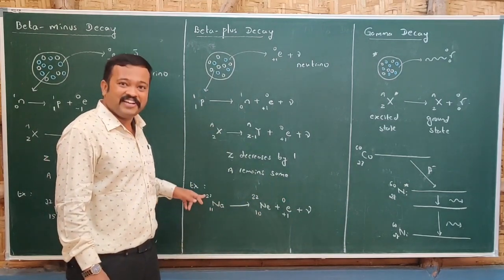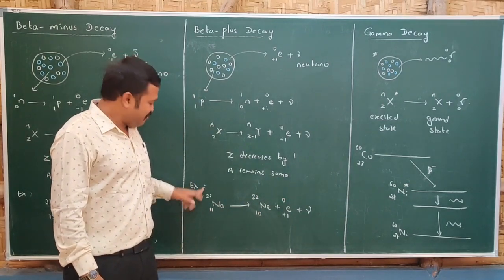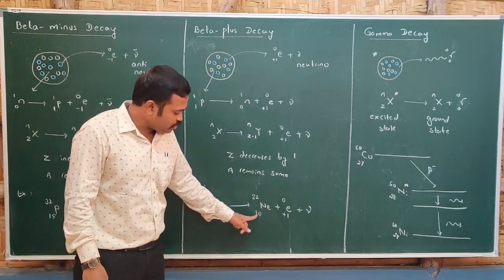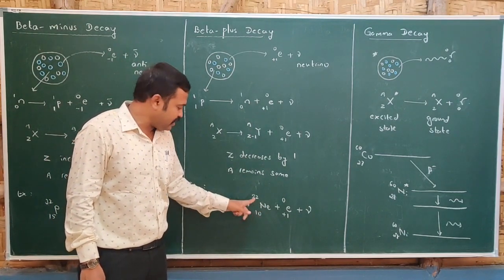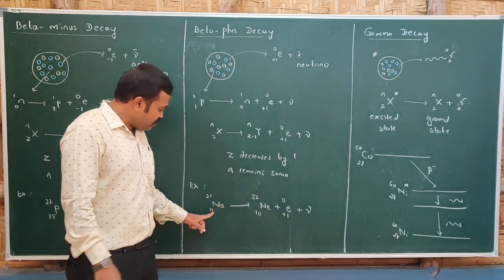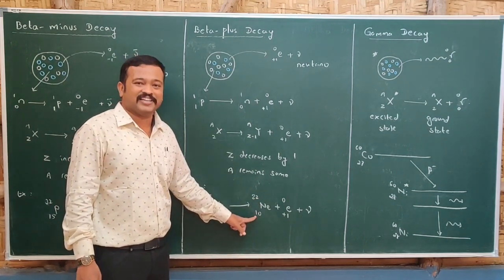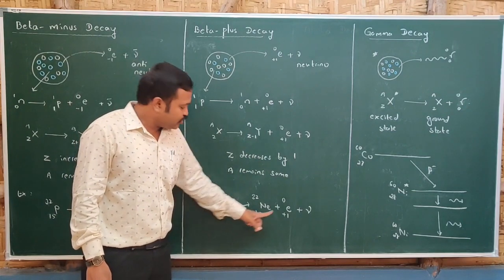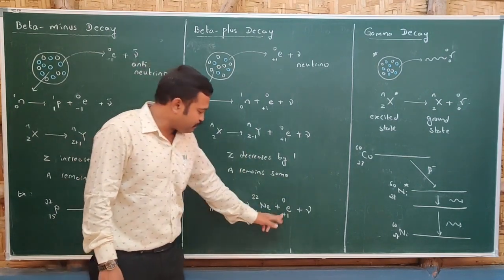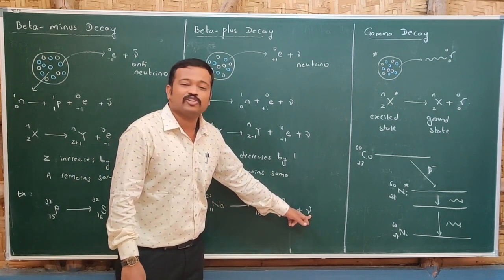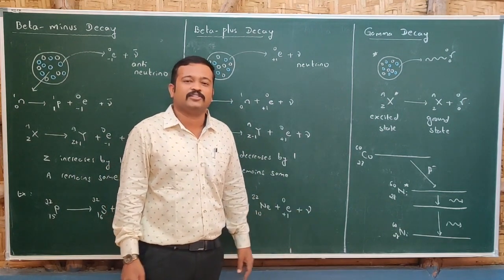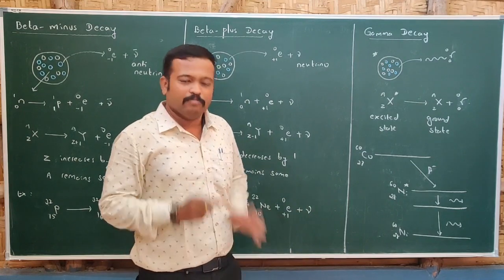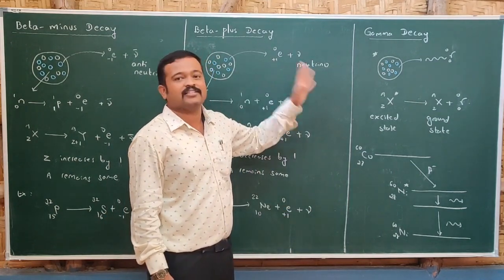Let us take an example: sodium-22 (atomic number 11). Whenever sodium emits a positron, it converts into neon with atomic number 10 and mass number 22. The atomic number decreases by one to 10, which is the nucleus of neon. The positron (charge plus 1, mass 0) and a neutrino are both emitted. The neutrino is emitted for conservation of energy and spin momentum.